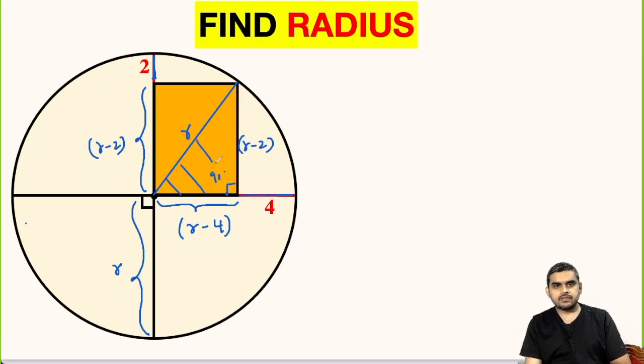If we take this triangle, this is a right angle triangle, so we can apply Pythagorean theorem here. The hypotenuse is r, so hypotenuse squared is equal to r minus 2 whole squared plus r minus 4 whole squared.